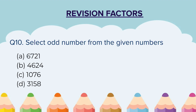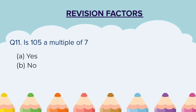Question 10: Select the odd number from the given numbers. 4 numbers are given — you have to select the odd one. Question 11: Is 105 a multiple of 7? You have to check and then choose your answer out of yes and no.